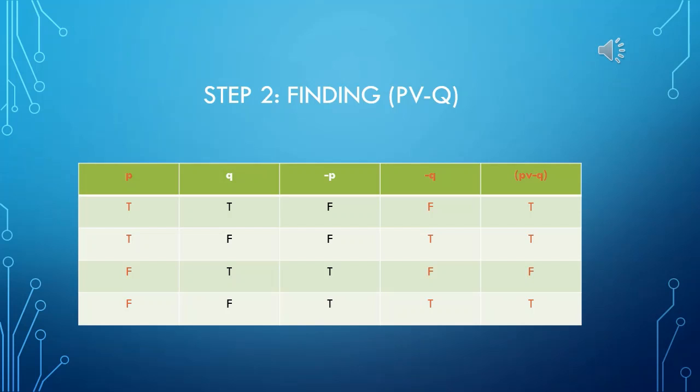Now it's time to solve P or negative Q part of the compound proposition. As you can see, I've mentioned P column, negative Q column, and the P or negative Q column with the red color. These are the three columns we will be using to solve the P or negative Q part of the proposition.